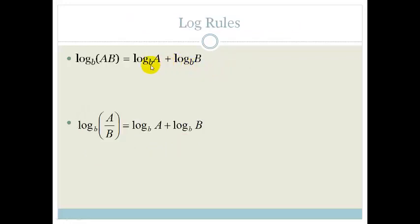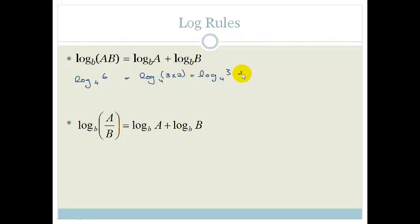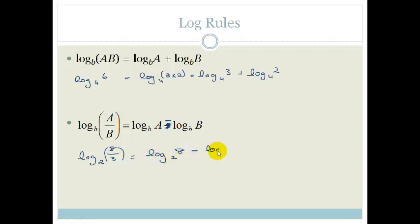Now let's look at the log rules. Log of a times b, base b, is the same as log a base b plus log b base b. For example, log 6 base 4 could be written as log of 3 times 2, base 4, which gives log 3 base 4 plus log 2 base 4. Similarly, if we've got log of 8 divided by 3, base 2, that's log 8 base 2 minus log 3 base 2. So when you're multiplying, you're adding, and when you're dividing, you are subtracting.